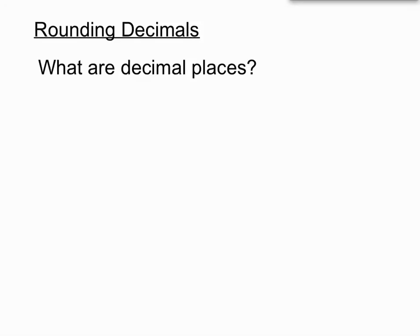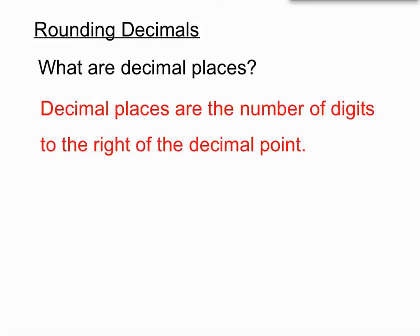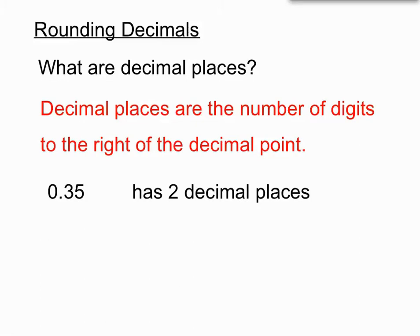Before we start, let's check on one term: decimal places. Decimal places are the number of digits to the right of the decimal point. So 0.35 has two digits to the right of the decimal point, so we would say that 0.35 has two decimal places.